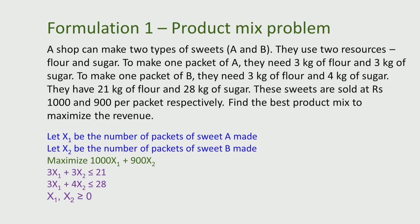Now we will look at this example and try to formulate it as a linear programming problem. The first thing the shop has to decide is how many packets of the two sweets are going to be made. We start by defining the variables X1 and X2, where X1 represents the number of packets of sweet A made and X2 represents the number of packets of sweet B made. In general, X1 and X2 represent the quantity of the products being made.